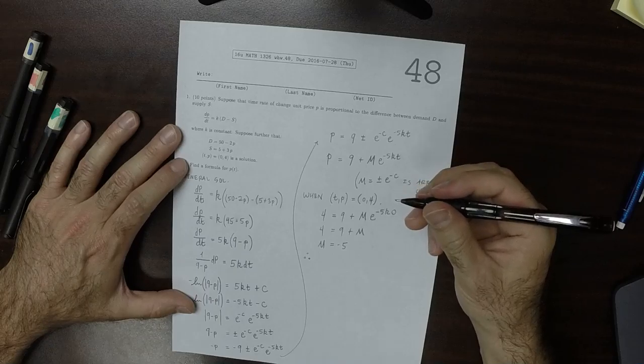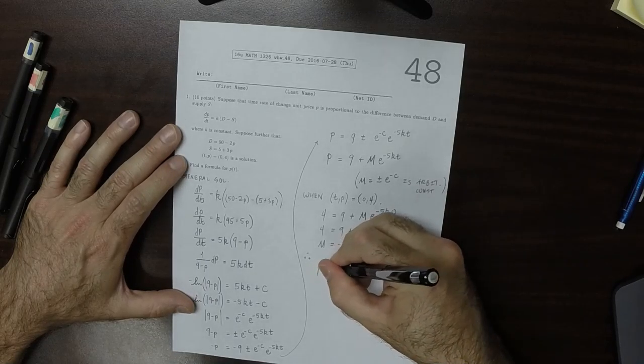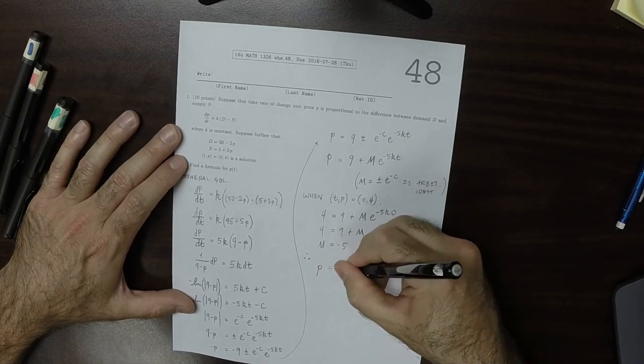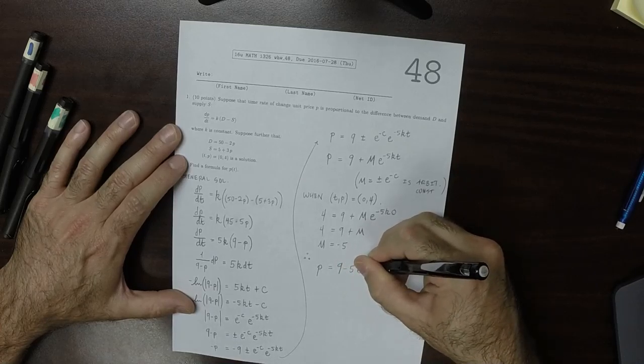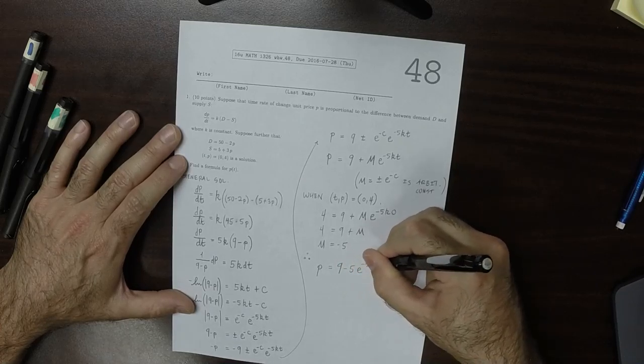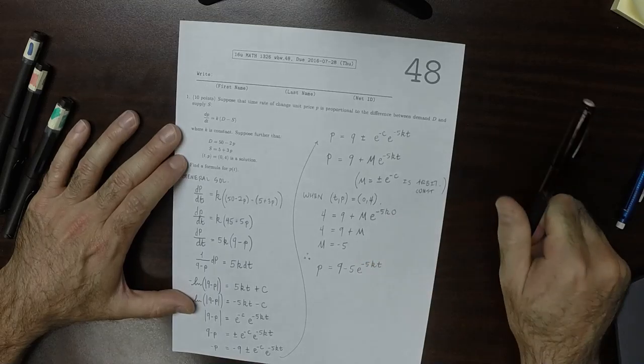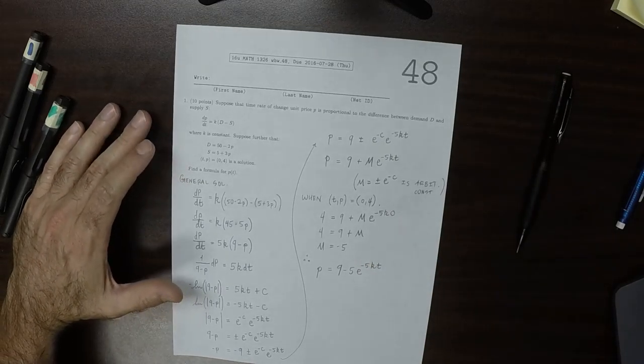So as a result, the answer is that p is 9 minus 5 exponential negative 5kt. And that's the answer.